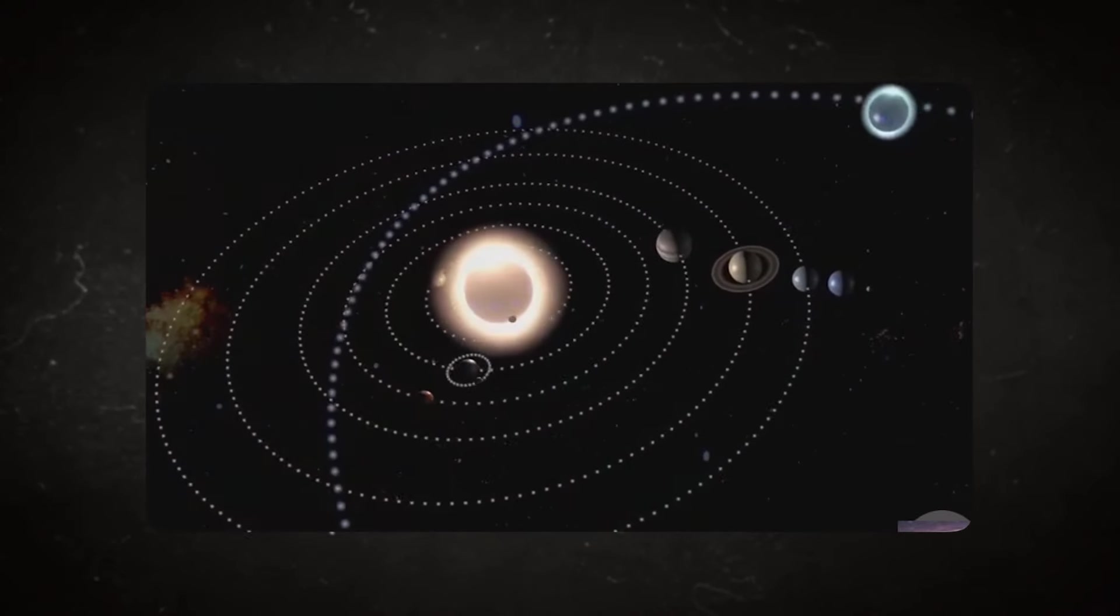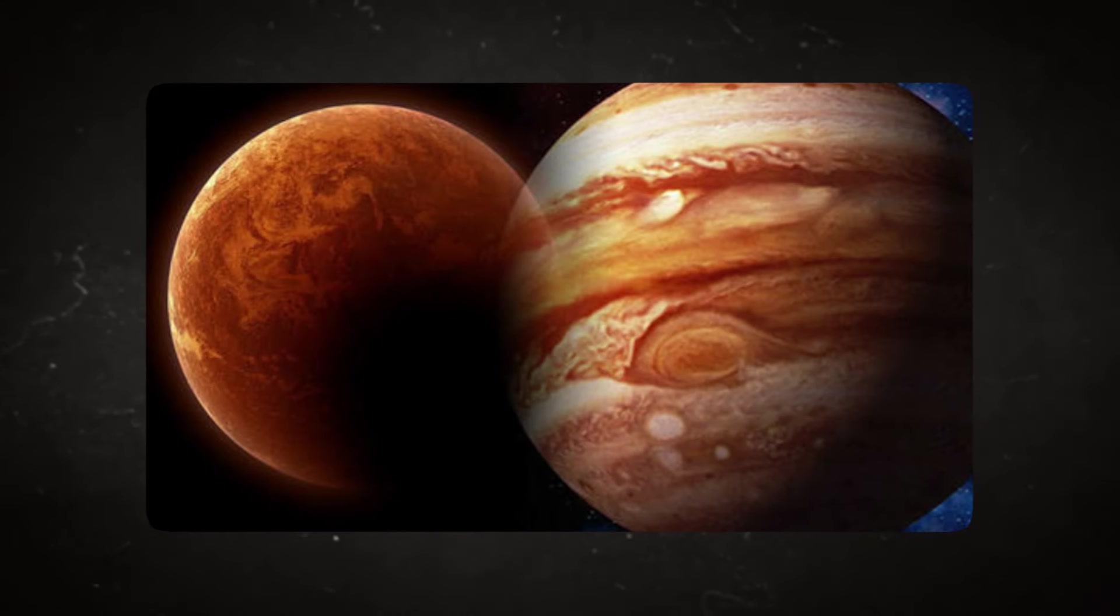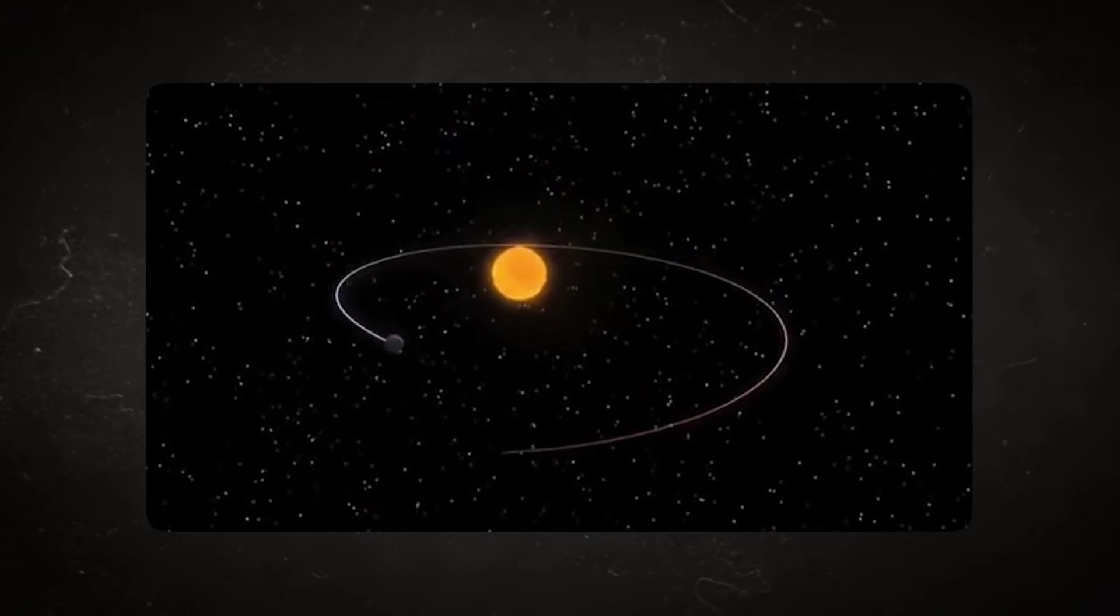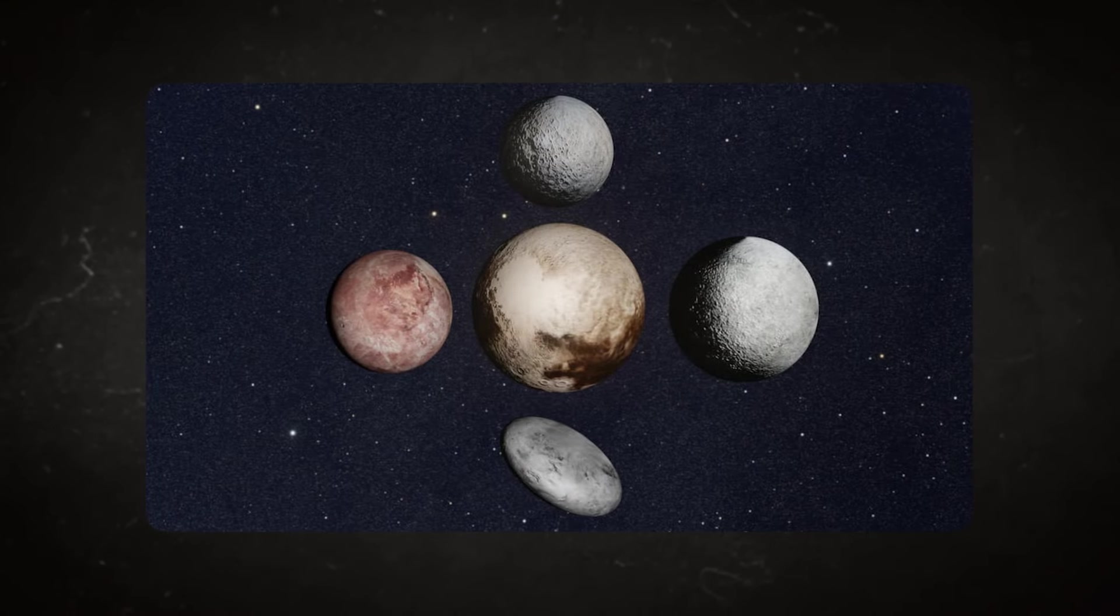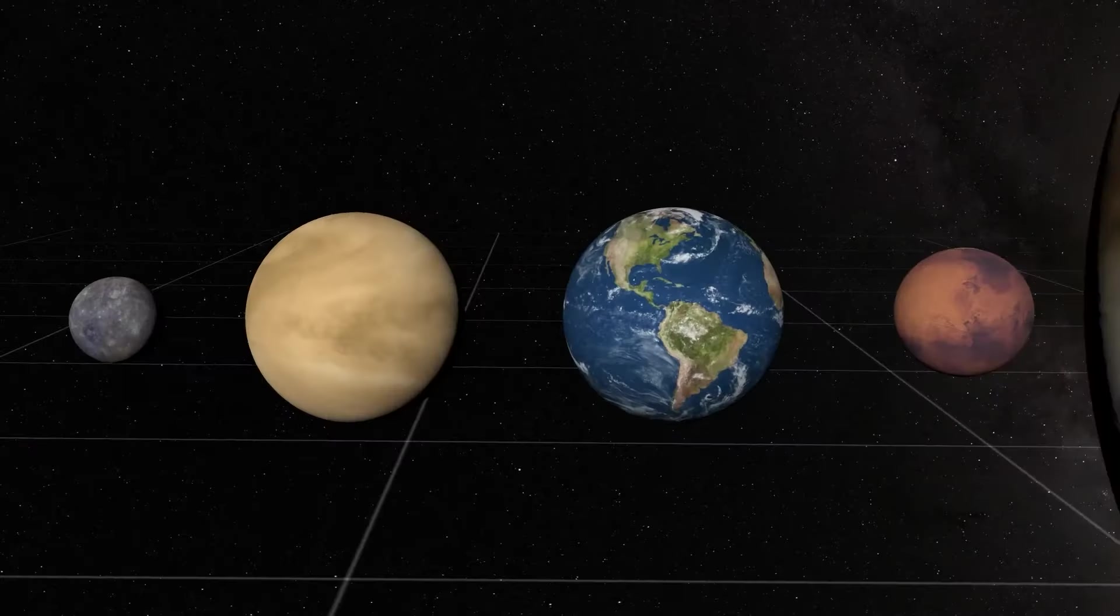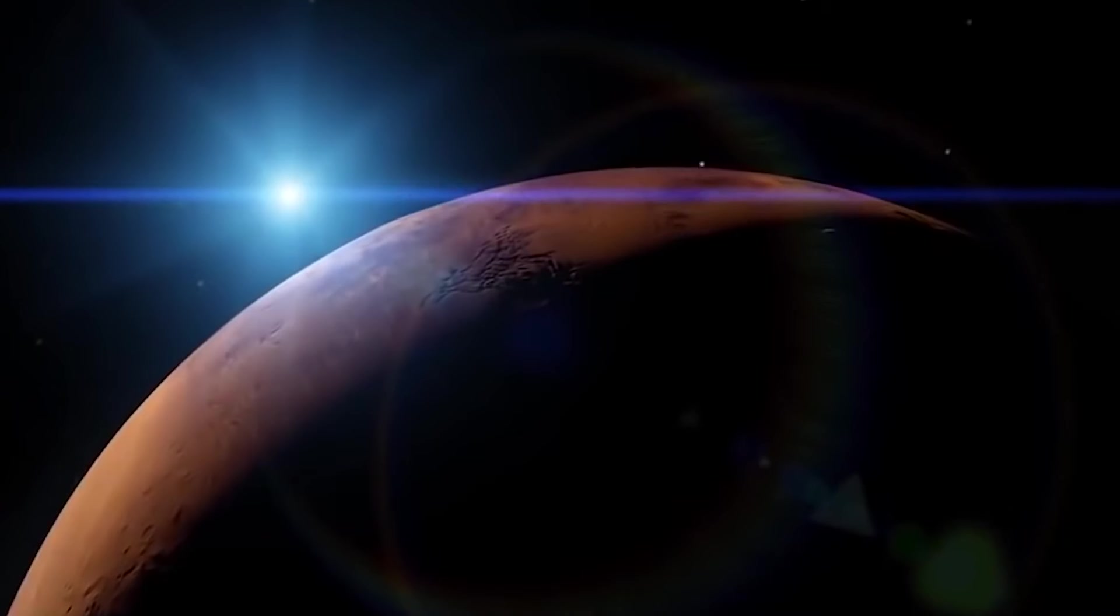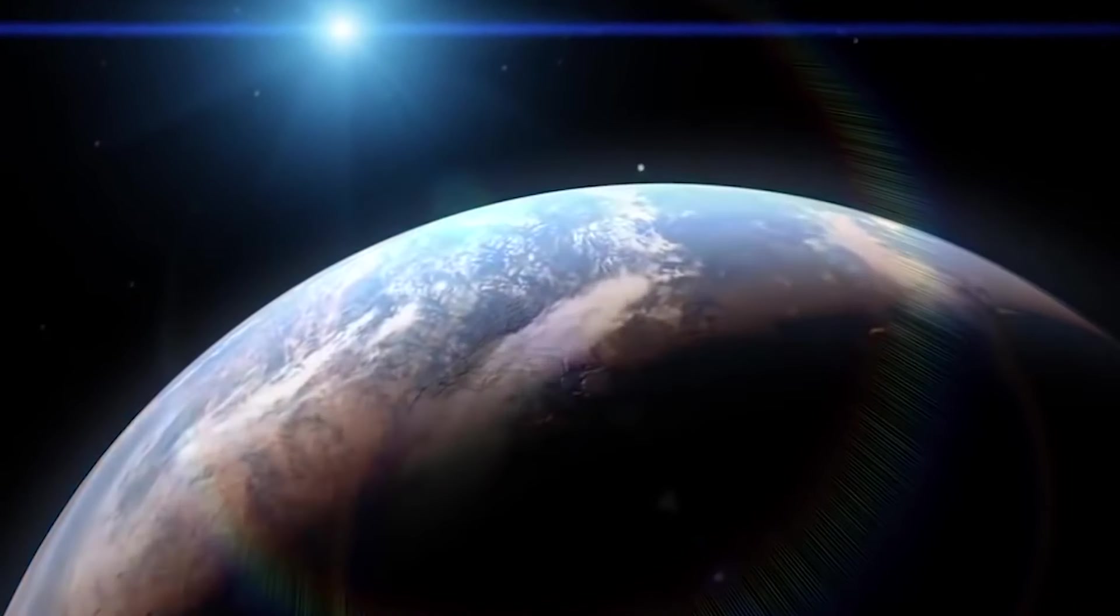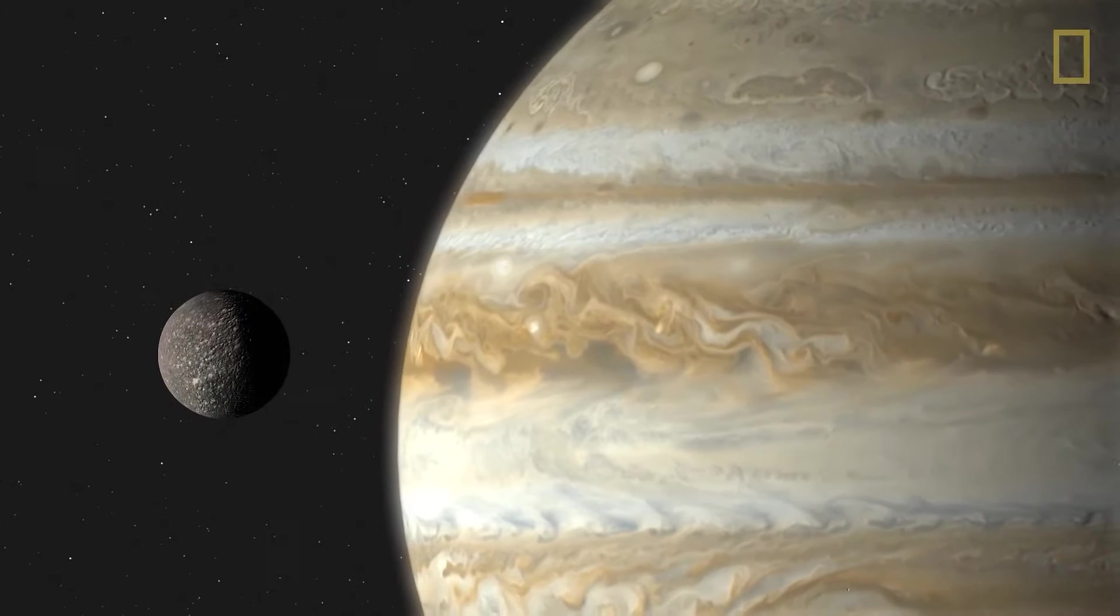On the other hand, asteroids are rocky remnants from the early formation of the solar system, primarily found in the asteroid belt between Mars and Jupiter. They also vary in size and orbit the Sun, ranging from small rocky fragments to larger bodies like Ceres, which is also classified as a dwarf planet. These celestial objects differ from planets due to their smaller sizes, irregular shapes and diverse compositions, consisting mainly of rocky and metallic materials.